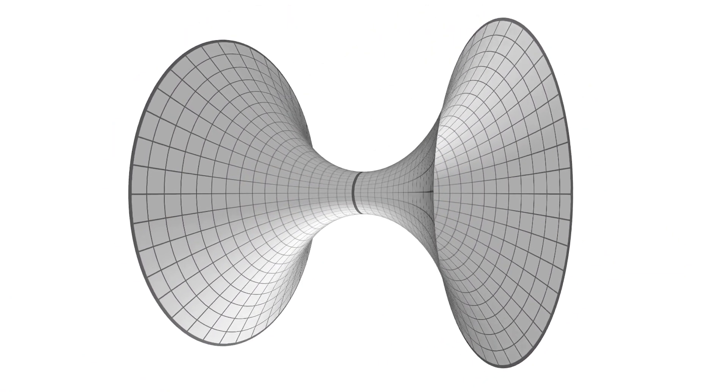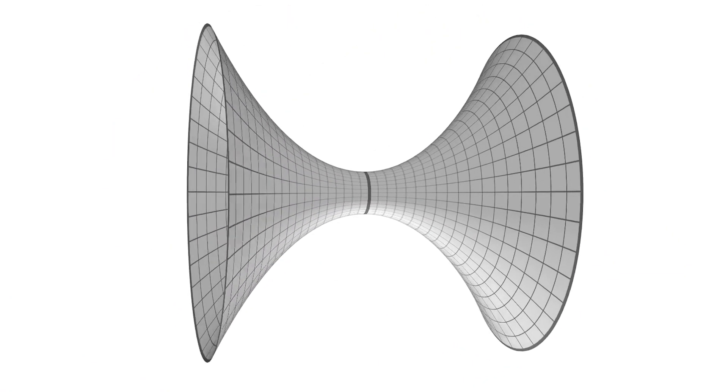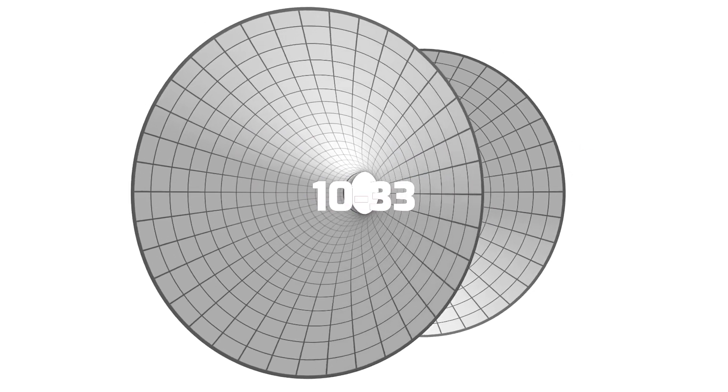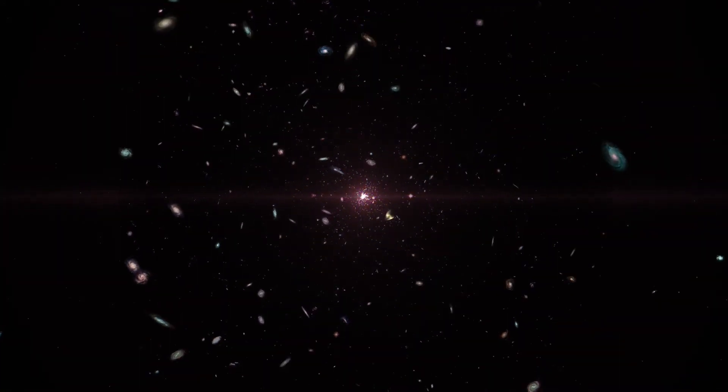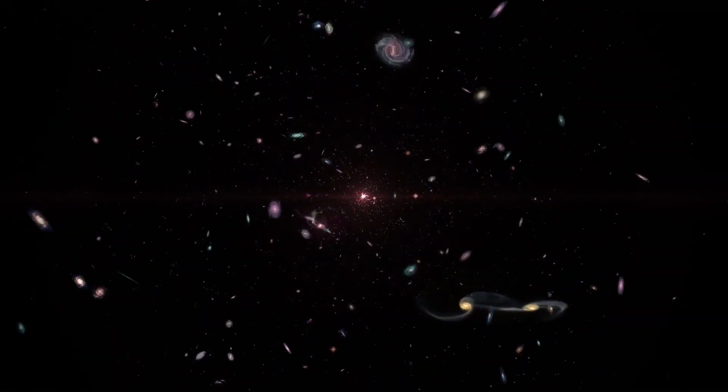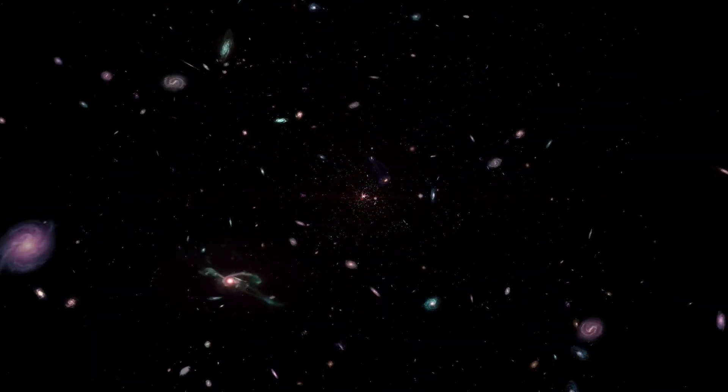At first, it is anticipated that primordial wormholes will exist at scales ranging from 10 to the negative 33 centimeters. On the other hand, it's not impossible that some of them have ballooned to enormous proportions as the universe has expanded.